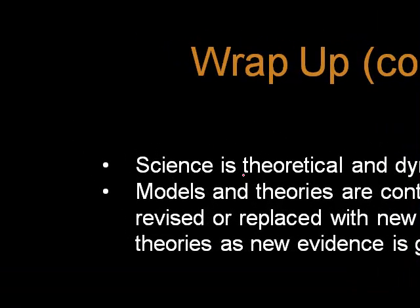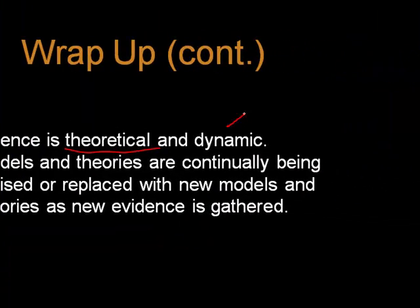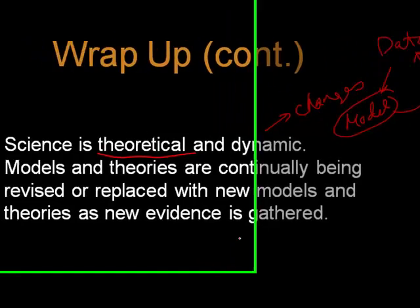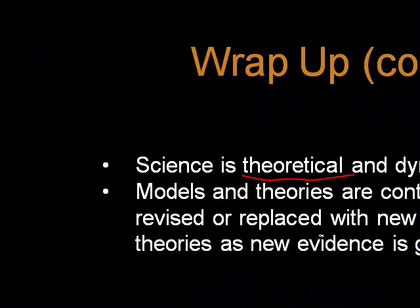One thing to know about science is it's theoretical and it's dynamic. Dynamic means it changes. So we have a model based on data. We get more data, changes the model, collect more data. The model gets altered constantly in this process. Models and theories are continually being revised and replaced with new models and theories. There's new evidence.